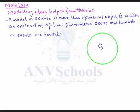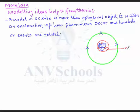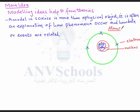If we look at this model, you have maybe one, two, three protons. Then you also have one, two, three — this is lithium. It also has neutrons, and together this is the nucleus. Around it are electrons. This is a model that helps us explain what an atom looks like, and you can see how a model really makes things easy.